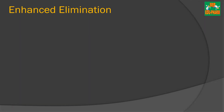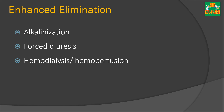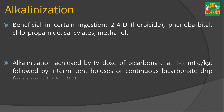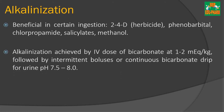Another method in the management of poisoning is enhanced elimination, which aims to increase the elimination rate of poisonous substances. This can be done by three methods: alkalinization, forced diuresis, and haemodialysis or haemoperfusion. In alkalinization, alkalis are used to nullify the effect of substances like 2,4-D (an herbicide), phenobarbital, chlorpropamide, salicylates, methanol, etc. Alkalinization is achieved by an intravenous dose of bicarbonate at 1–2 mEq per kg, followed by intermittent bolus or continuous bicarbonate drip until a urine pH of 7.5 to 8.0 is obtained.